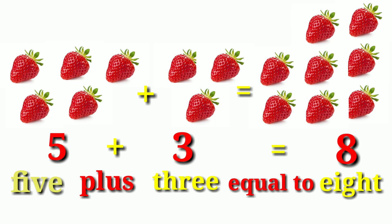We have five strawberries and three strawberries. If we add them, then we have eight strawberries. We read it as five plus three is equal to eight.